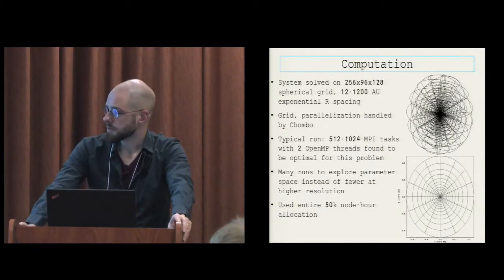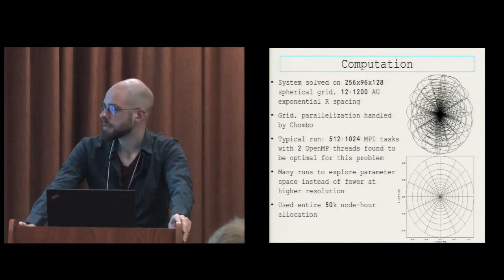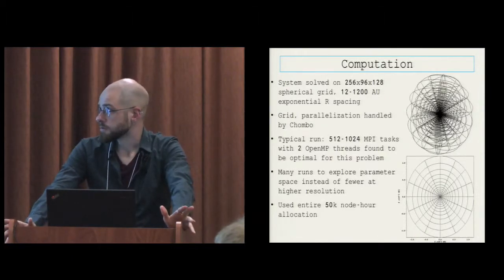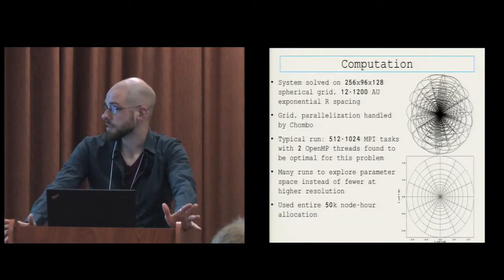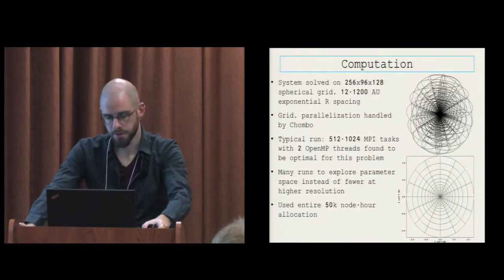I had to make a trade-off: do I do many small runs to explore the parameter space and try different things, or do I do a few things at high resolution? I used the entire 50,000 node hour allocation doing that, so I think that was the right choice. There was a lot of development, and there were some dead ends, some things that resulted in nonsense solutions. If I did higher resolution, used more node hours at a time, that would have wasted more time on the things that didn't work.